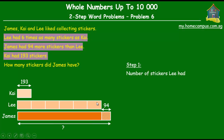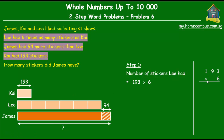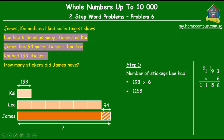Lee had six times as many stickers as Kai, so the number of stickers that Lee had would be equal to 193 times 6. We can calculate that here on the right of the screen: 193 times 6. 3 times 6 is 18, put the 8 and carry the 1. 9 times 6 is 54 plus 1 is 55, put the 5 and carry the 5. 1 times 6 is 6 plus 5 is 11. So 193 times 6 is equal to 1158. The total number of stickers that Lee had is 1158, and that is this orange block over here.